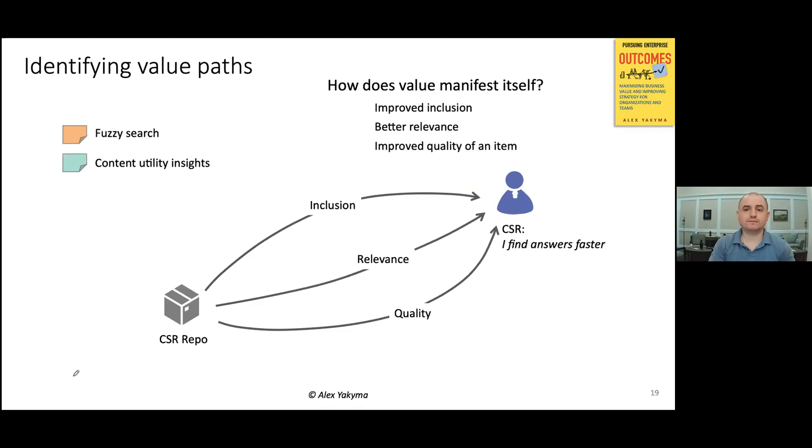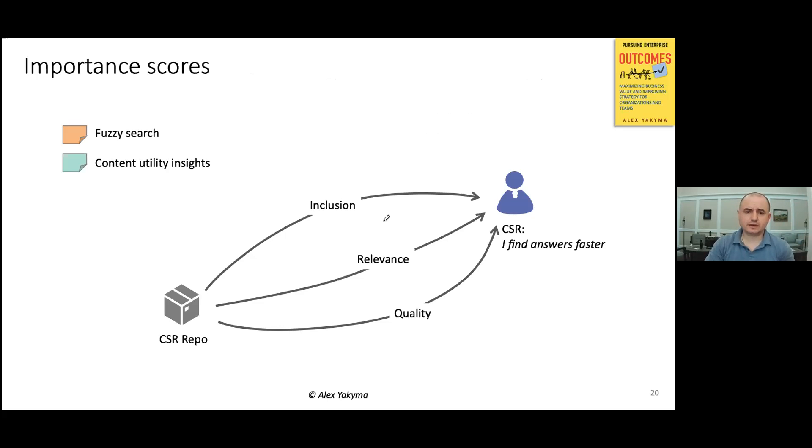And this is the power of the method because business value is always contextual. So, now what we're going to try to do is we're going to bring over each one of those features to the left side of this equation and see how we can assess the relative value of these features against these value paths. So, the first thing that we're going to do is identifying the importance scores. The importance scores are very simple concepts. We're asking ourselves, basically, how important is each value path to this outcome. So, in other words, how important is inclusion to help CSRs to find answers faster? How important is relevance of search results to help them find answers faster? And so on. You got the idea. And let's say after a little bit of discussion, they scored them. And this is the result, three, five, and two. And this only means that that one is this much more important than that one to this outcome.